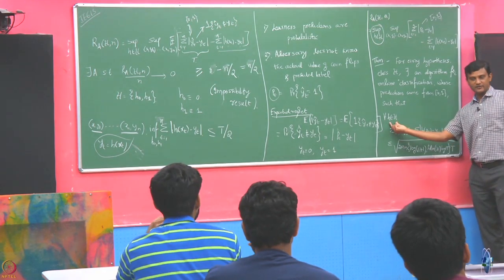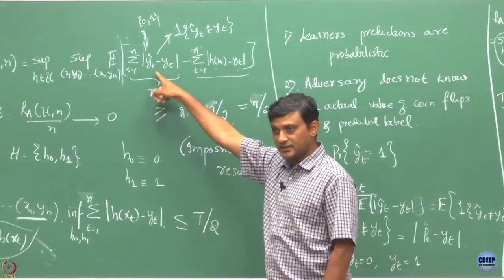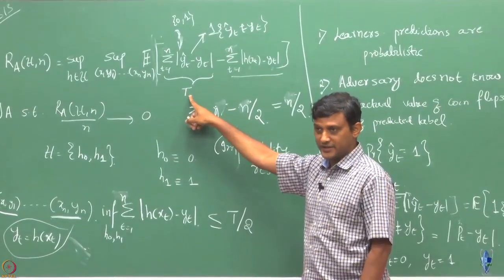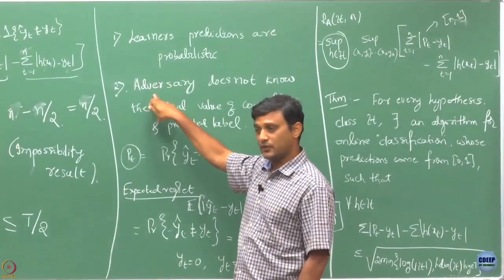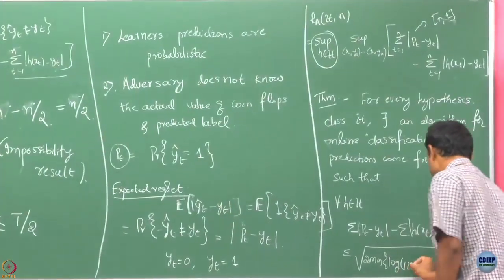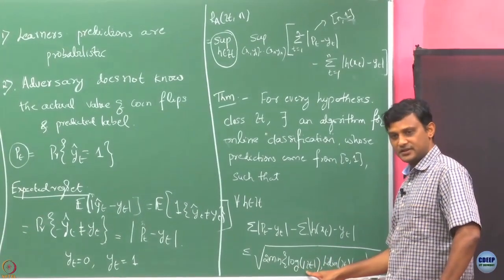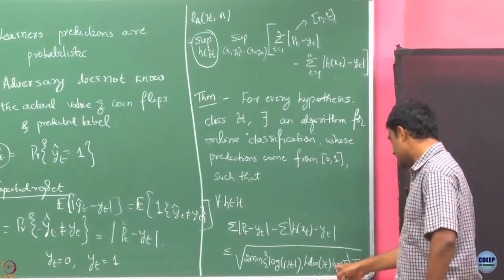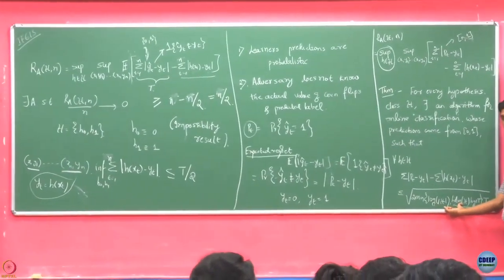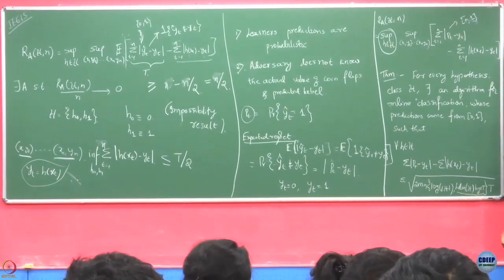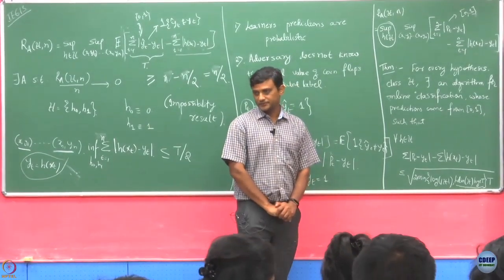This precise statement holds irrespective of the cardinality of your hypothesis class H. It may happen that even though your hypothesis class has infinitely many hypotheses, the Littlestone dimension of that class can be finite. In that case, the minimum term is determined by Ldim(H). If the hypothesis class is finite, we know the Littlestone dimension is upper bounded by log₂|H|, so everything is fine. If H is infinite, only the Littlestone dimension term matters.